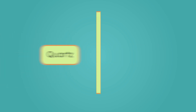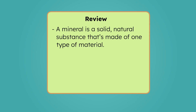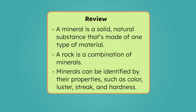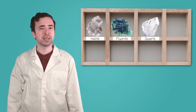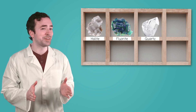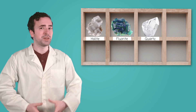We did it, scientists! While I label my mineral collection, let's review everything we've learned today. A mineral is a solid, natural substance made of one type of material, while a rock is a combination of minerals. Minerals can be identified by their properties, such as color, luster, streak, and hardness. To learn more, check out the activities and practice questions that go with this lesson. My mineral collection is officially labeled — I'm so excited to find and identify even more. But how do these separate minerals end up forming rocks? We'll investigate that in our next lesson. Keep exploring, scientists — there's always more to discover beneath the surface. See you next time!